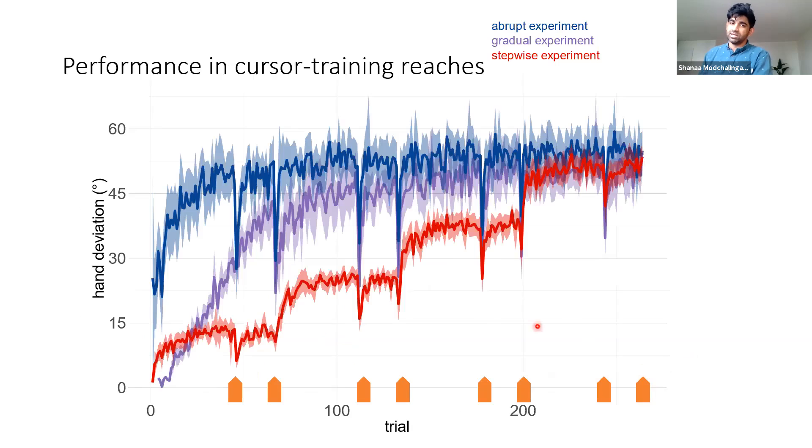This is just how performance looked like. What I just want to highlight here is that all three groups by the end of training, when they're during block four when they're adapting to a full 60 degree rotation, they perform similarly. All groups are able to adapt to a 60 degree rotation.